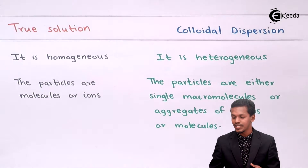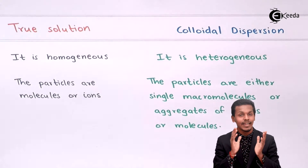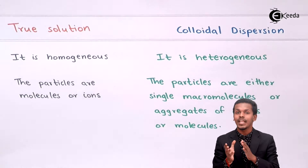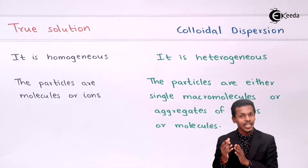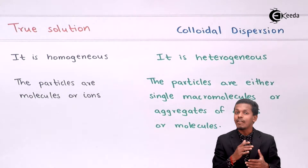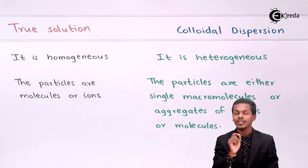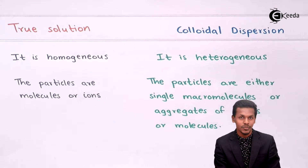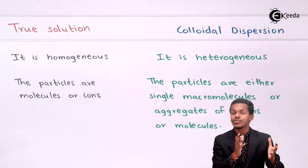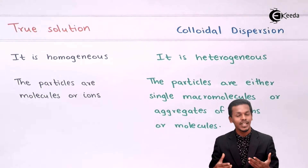But when we talk about colloidal dispersion, it is known to be the heterogeneous phase. As we discussed in our previous lecture, there are eight possible colloidal systems where a solid can be dispersed in a solid, or a liquid can be dispersed in a liquid medium. But those are not considered to be true solutions because of various criteria, including particle size. So this heterogeneous nature is the first distinguishing point.